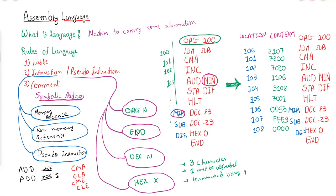END specifies the end of the entire program. It is different from HLT: HLT is a register reference instruction that specifies the end of instructions, meaning no more instructions follow. END specifies the end of the entire program. Recall that a program is divided into two parts — one containing instructions and one containing data. The end of the instruction part is specified by HLT, and the end of the entire program is specified by END. Variables used throughout the program are typically declared between HLT and END.